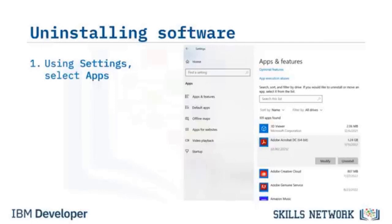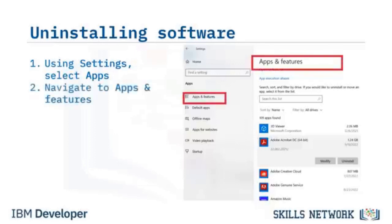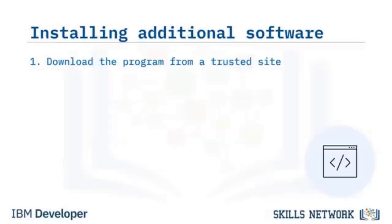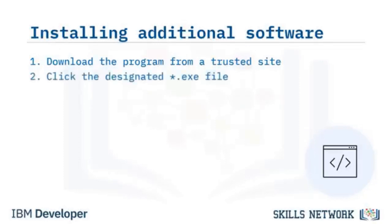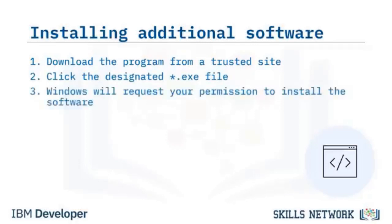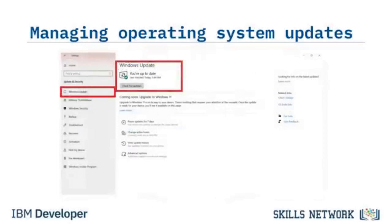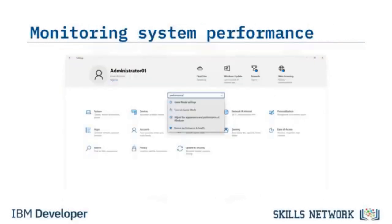Before downloading software, verify that the website is legitimate. In most instances, to install the software, click the designated .exe file. Windows will request your permission to install the software — simply follow the manufacturer's installation instructions. Windows manages most operating system software updates automatically. To check the update status, using the Settings app select Update and Security, where you can view your Windows update status. If your user mentions issues with system performance, open the Settings app, enter 'Performance,' and select Device Performance and Health.